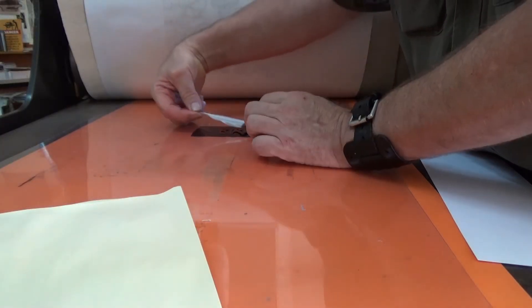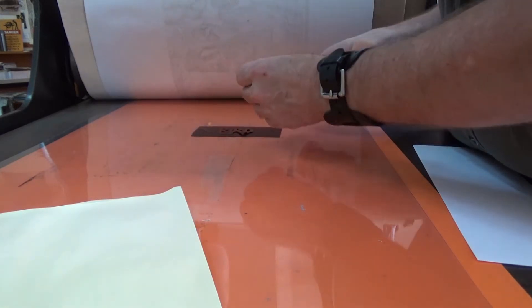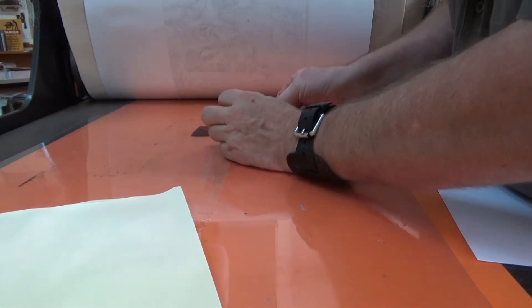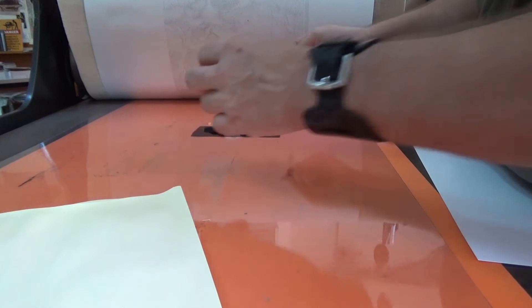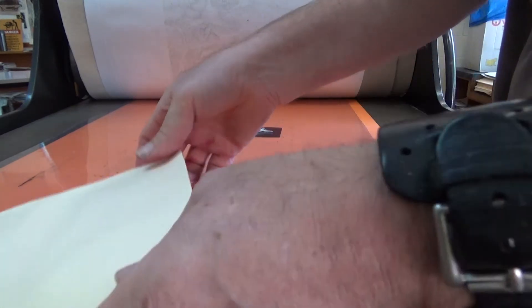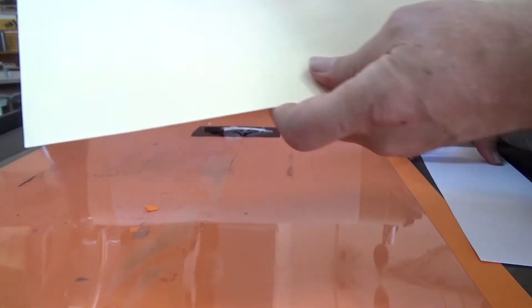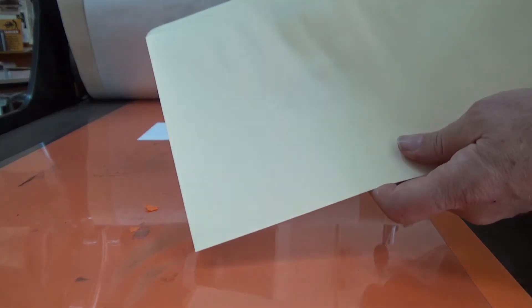So I put the word bird the right way around, because this is being transferred to the feather. So once I run that through the press, it will transfer the word bird the wrong way around on the feather, back to front, which will be the right way around for printing.